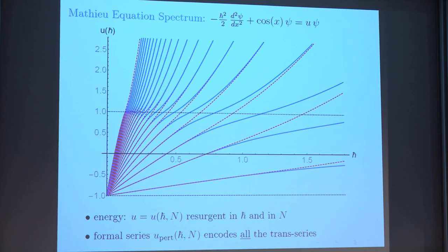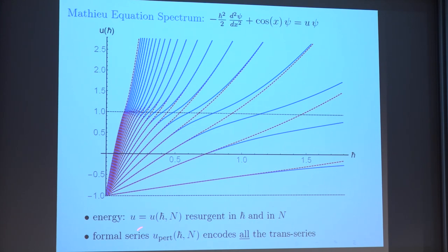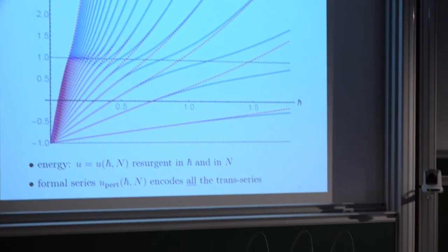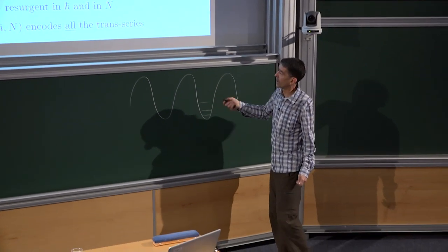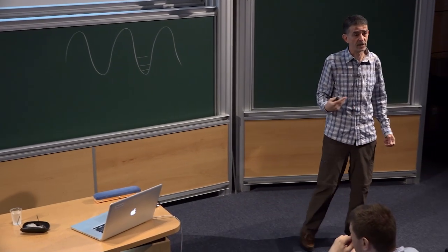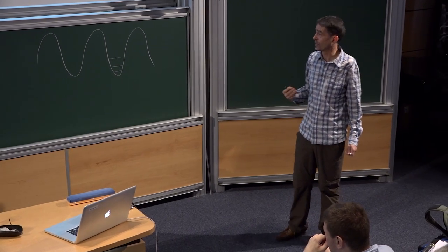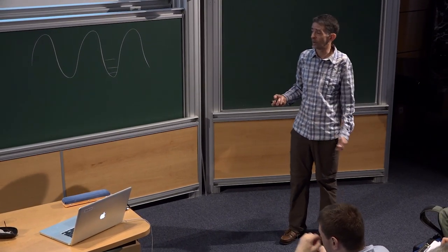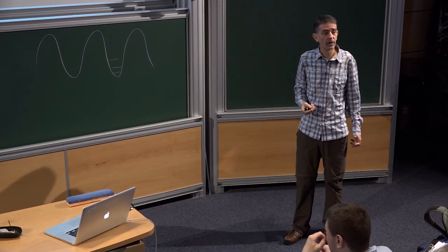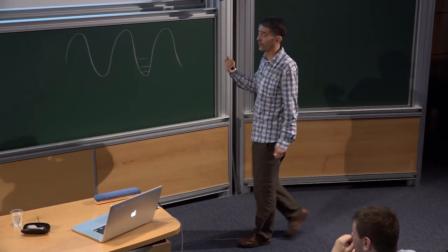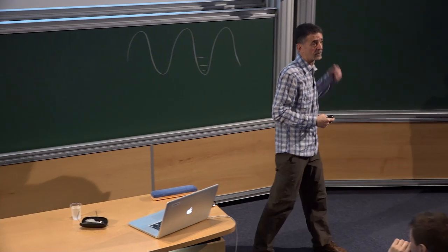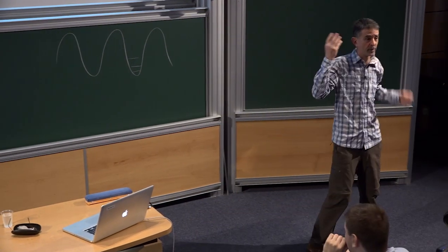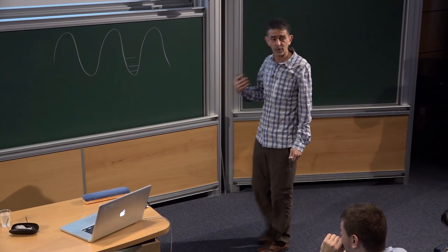One thing we've learnt from resurgence: the formal series you get from perturbation theory in this well — a divergent formal series in h-bar for each N — develops into a trans-series using resurgence. We've learnt that the formal series encodes all the information about all orders of the trans-series. It's really remarkable and something that could have been done 100 years ago, but nobody even thought of doing this calculation. If you look at the problem through the eyes of resurgence, it's an obvious calculation to do.